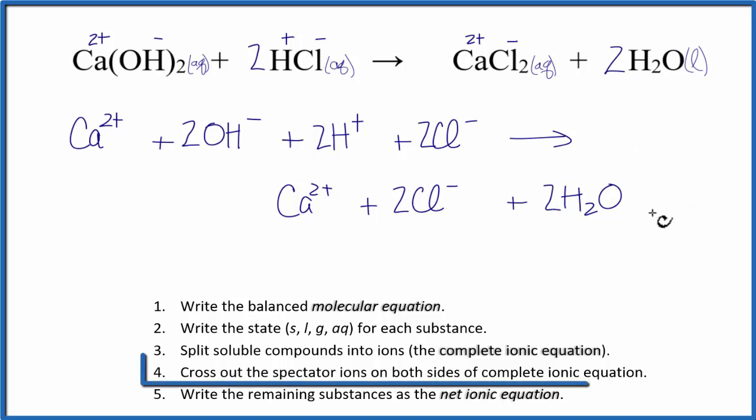Now I can cancel out things that appear on both sides of the equation. These are called spectator ions. Once we do that, we'll have the net ionic equation. So I have Ca 2 plus, that's on both sides of the equation, and then Cl minus, that shows up on both sides.